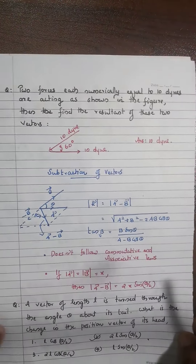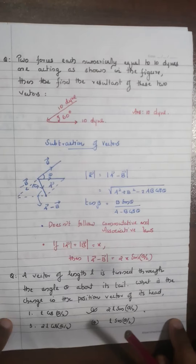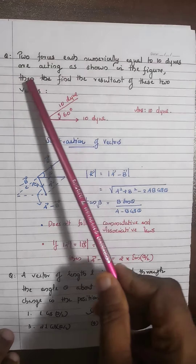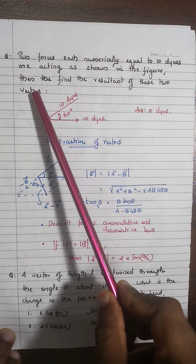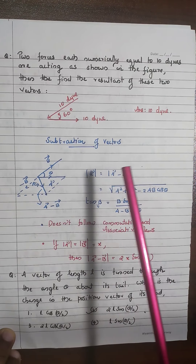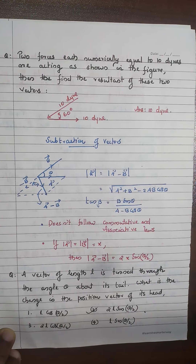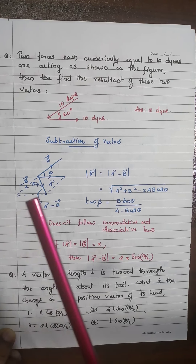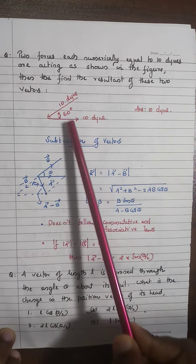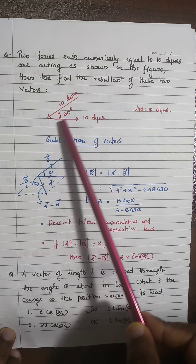Another important question: two forces, each numerically equal to 10 N, are acting as shown in the figure. Find the resultant. Since the magnitudes are equal, use R = 2x cos(θ/2). But keep in mind: the angle between them is not 60 degrees — it is 180 − 60 = 120 degrees, because the vectors point in those respective directions.